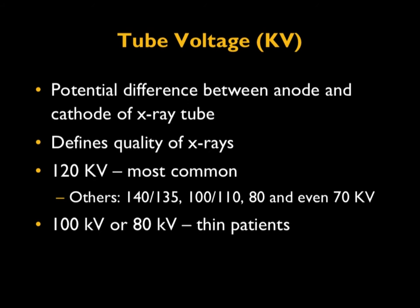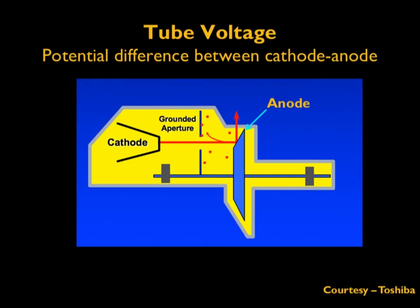Typically 100 kV or 80 kV is used on thin patients. Here is the diagram of an X-ray tube. The tube voltage can be thought of as the potential difference between the anode and cathode. The cathode is supplied by the tube current. The electrons produced at the cathode end are attracted towards the anode, and the speed at which the electrons are attracted to the anode results in the energy of the X-rays produced.